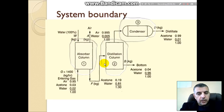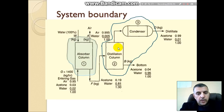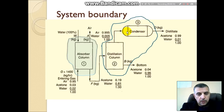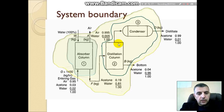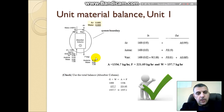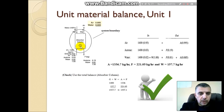You can define system boundaries for each unit. The distillation column can be combined with the condenser since the change is only in phase, not in mass. You can also define overall system boundaries. The material balance will first be taken for unit number one, the absorber column. Since this is steady state, input equals output.